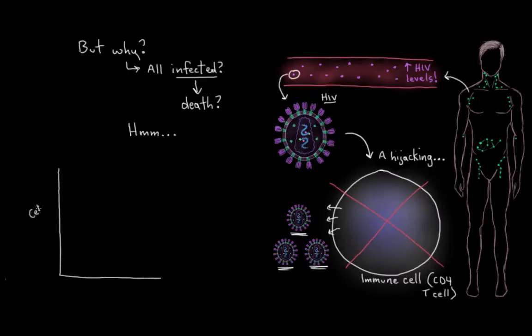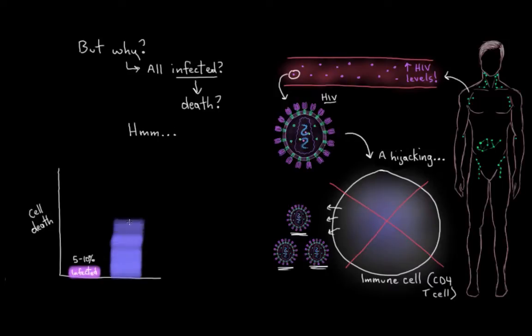And it turns out that in an HIV infection, only about 5-10% of the immune cells that end up dying off are actually HIV infected. The remaining 90-95% that die off are not even infected. That's ridiculous. How is that even possible?